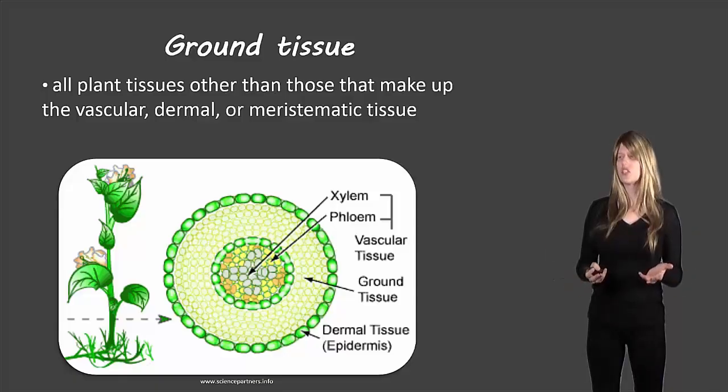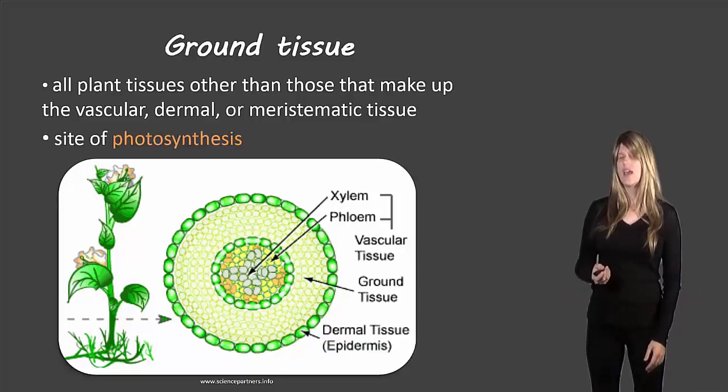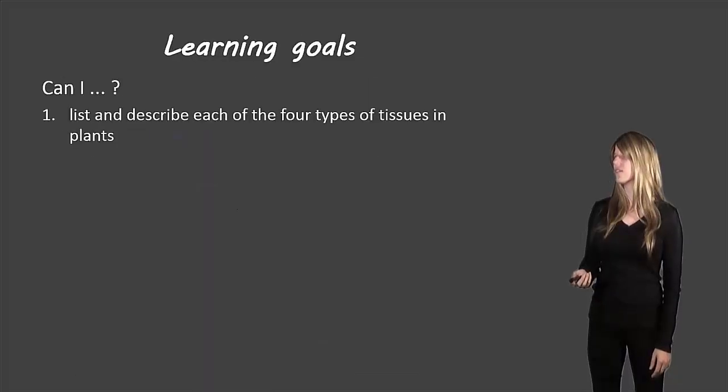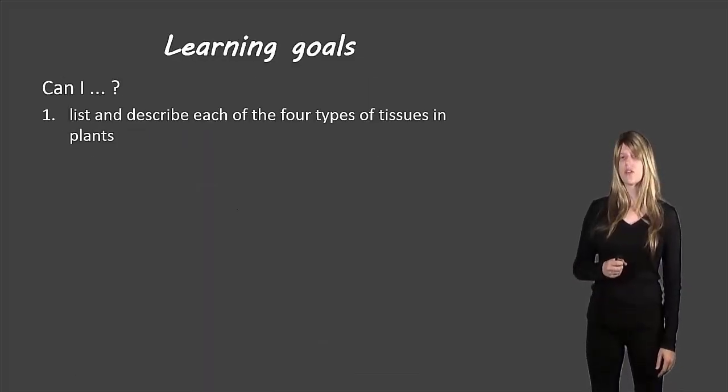This is all plant tissue other than the vascular, dermal, or meristematic tissue. It's all other types of tissue, and this is important because it's the site of photosynthesis.